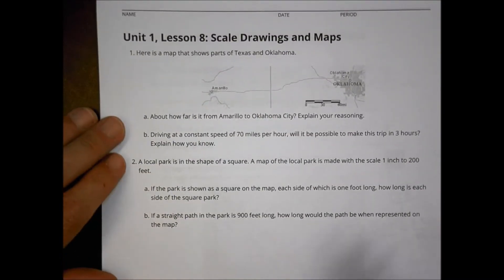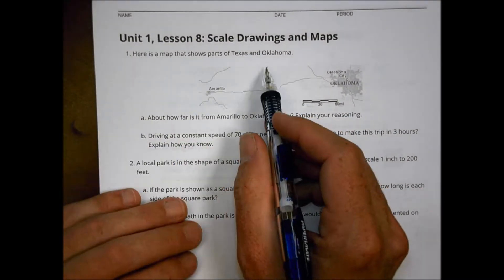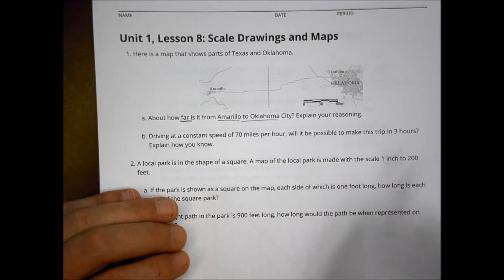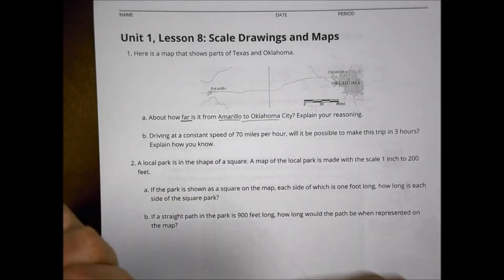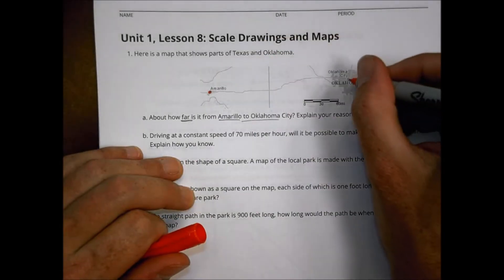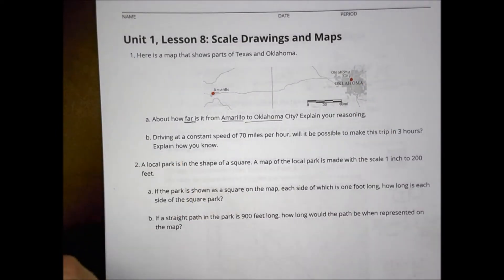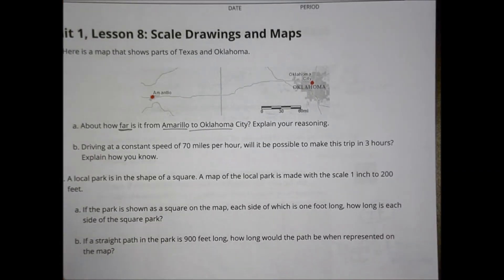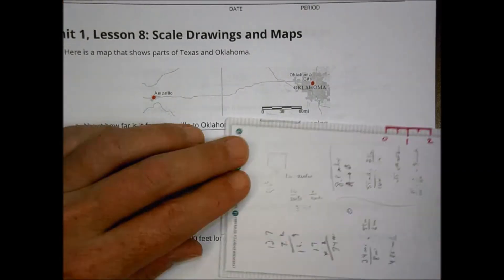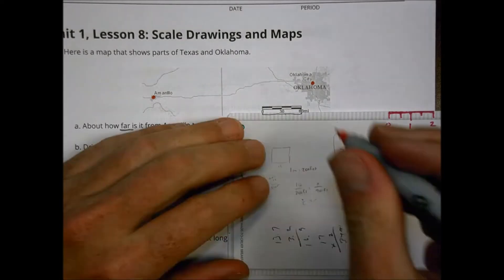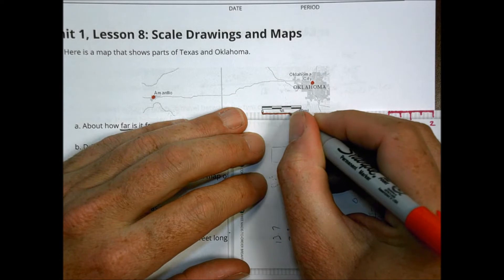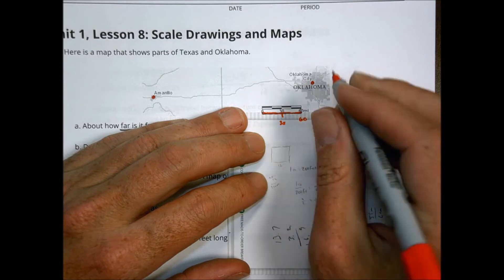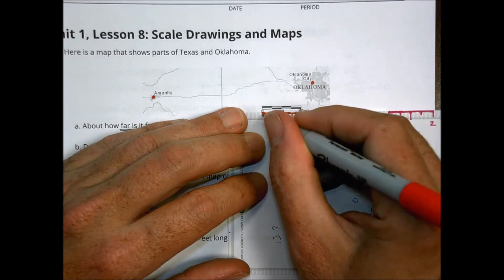Here we go. It says, here's a map that shows part of Texas and Oklahoma. About how far is it from Amarillo to Oklahoma City? Explain your reasoning. So we're looking to see how far is it from this point in Amarillo to this point in Oklahoma City and explain your reasoning. They gave us, first of all, a little bit of a scale, didn't they? Down below, we can see we have this scale right there, which is about 60 miles. So I'm going to go ahead and I'm going to draw this in orange. There's my 60, which means this is 30, this is 60, and that would make that a 15 and a 45.